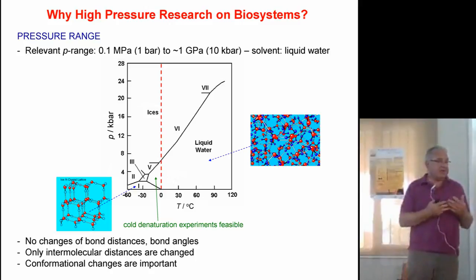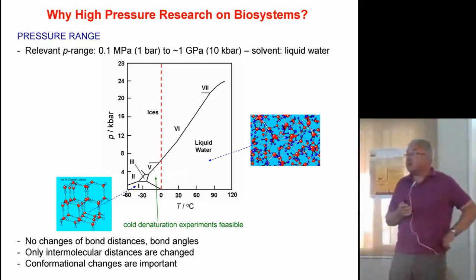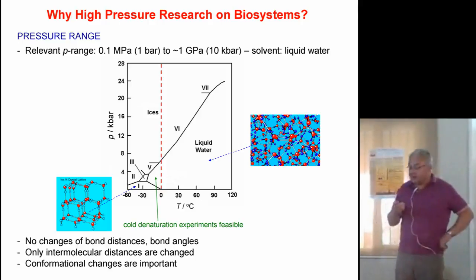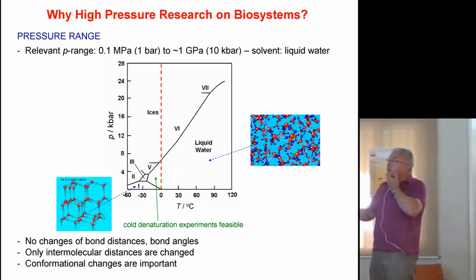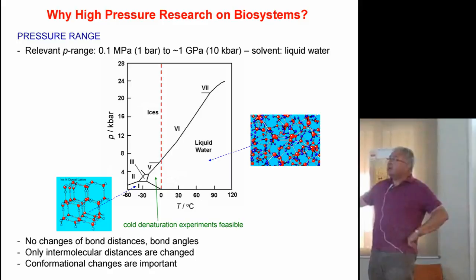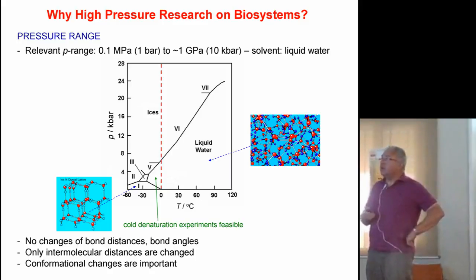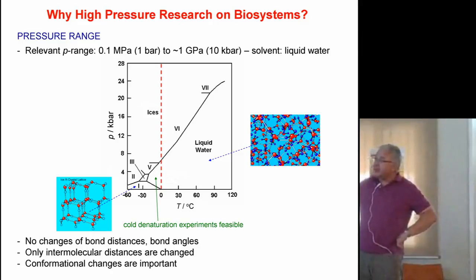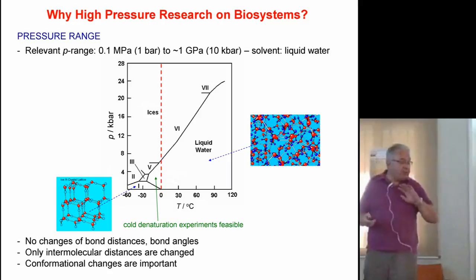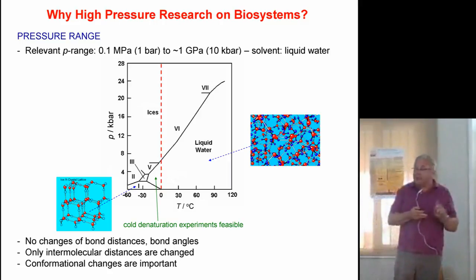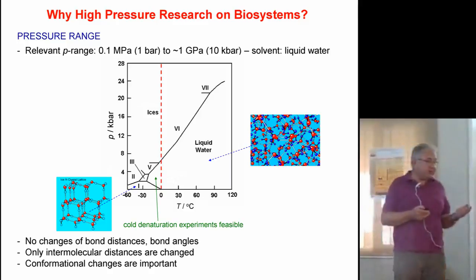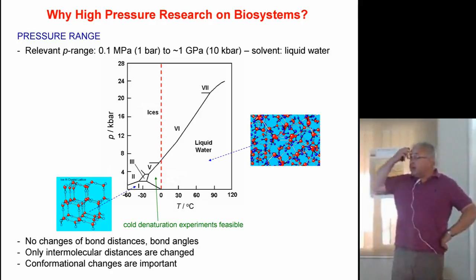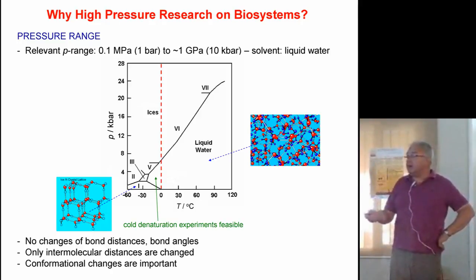Our solvent in our cells is essentially water, so what is the relevant pressure range? We have to stay in the fluid-like state. Looking at the pressure-temperature phase diagram of water, we have to stay in the liquid state. At around ambient temperature, the relevant pressure range goes up to about 10 kilobars, or essentially one GPa. At slightly elevated pressures of two to four kilobars, we can even go below zero degrees centigrade, meaning we can study cold denaturation of proteins, which occurs typically at minus 20 to minus 10 degrees centigrade.